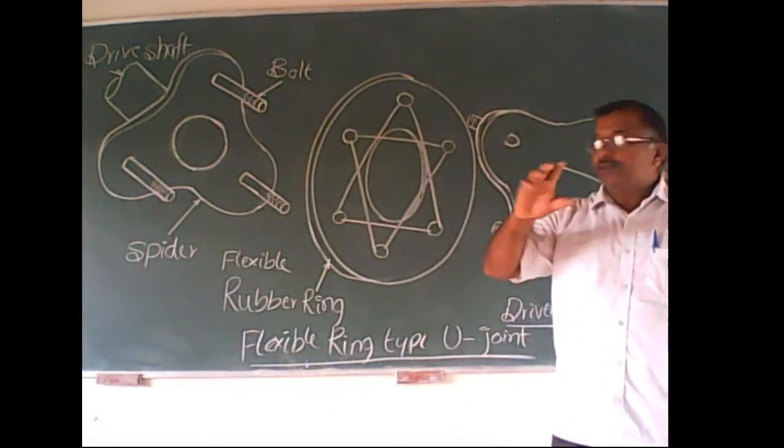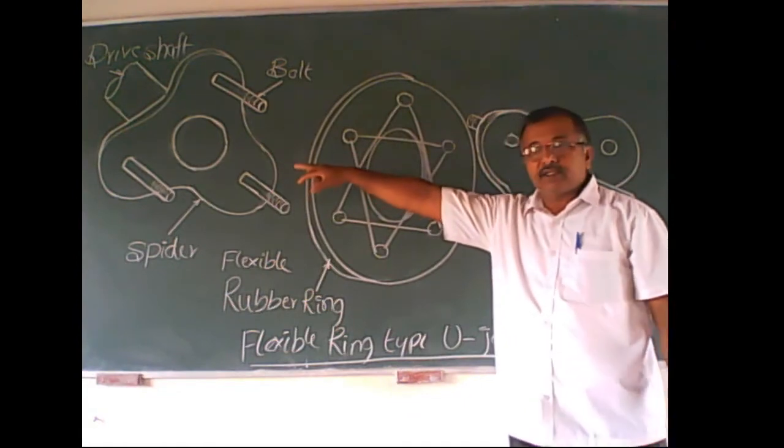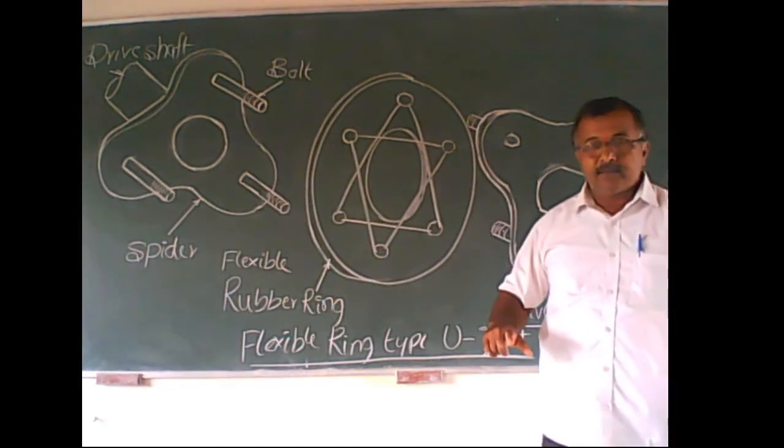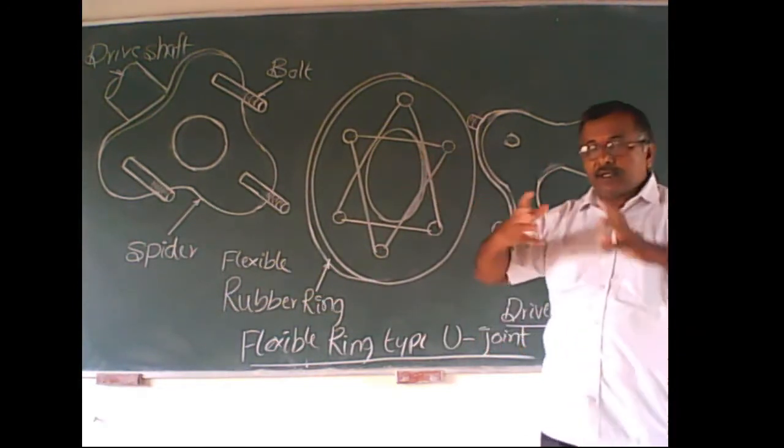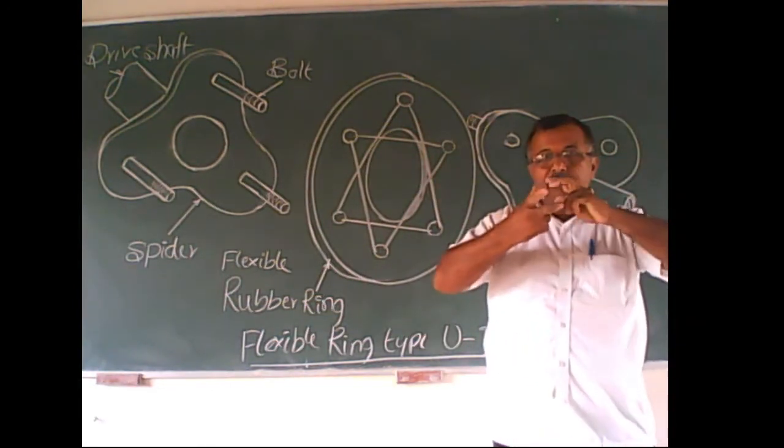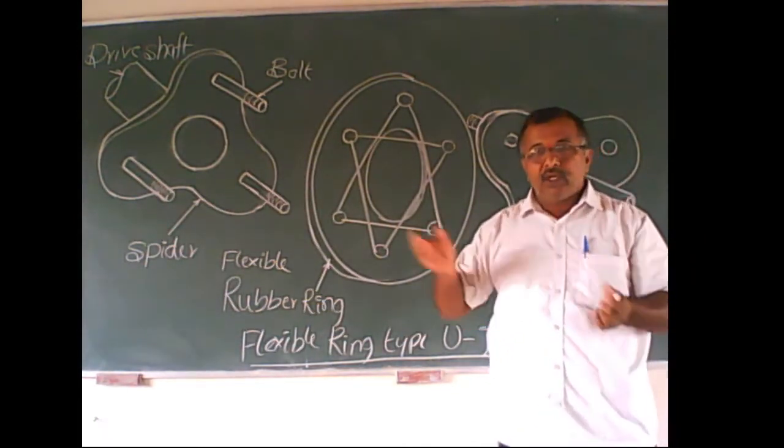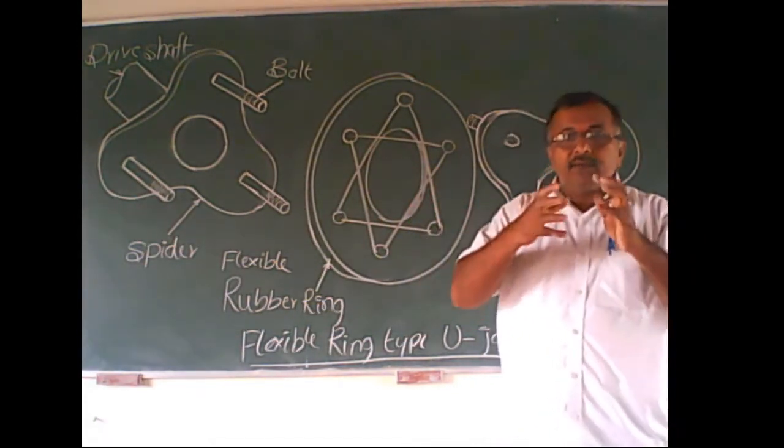Three bolts for that spider and other three are for second spider. In between that rubber part, it becomes flexible. It gives little bit movement. The limit is very less.